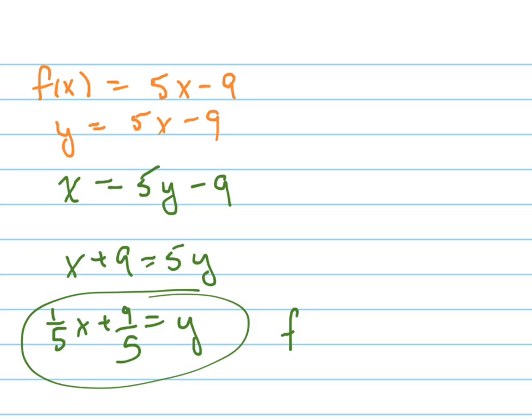And so we would write f inverse, we would write f negative 1 of x, which means f inverse equals 1 fifth x plus 9 fifths. And the reason I write it in function notation is because this is a function. If it wasn't a function, I wouldn't write it with function notation.